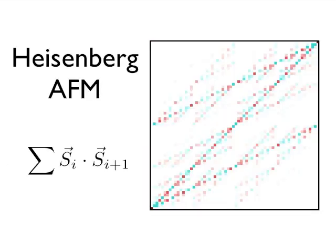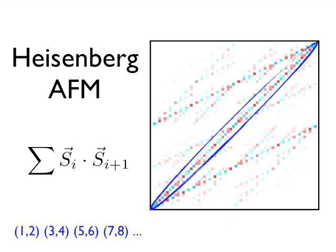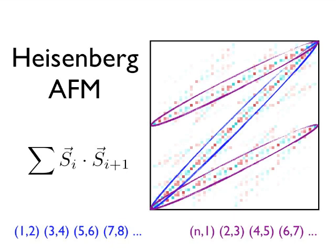Now, let us look at the ground state of the anti-ferromagnetic Heisenberg Hamiltonian. This diagonal line represents the states made of adjacent singlet pairs. This line contains a similar structure, but for a different pairing.